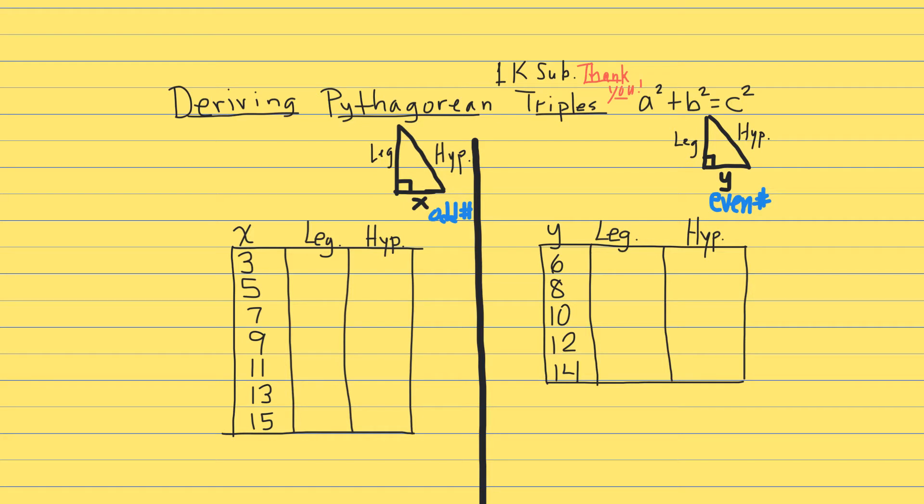On the right column we have y, which would be an even number like 6, 8, 10, 12, 14, and then we will derive a formula to come up with the other leg and the hypotenuse.